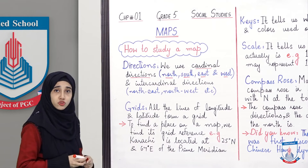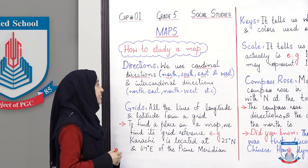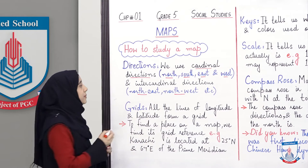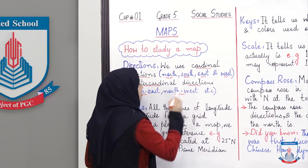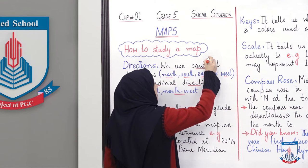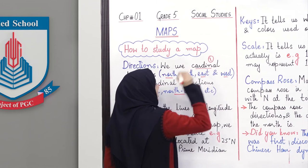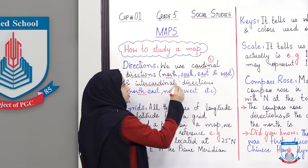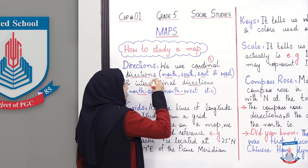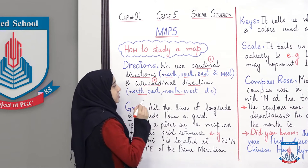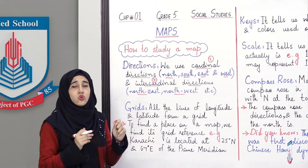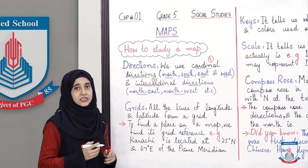Aur is ke ilawa hum kuch aur directions bhi use kertethe hai, jaise ke north-east, north-west, south-east. Toh in ko hum kehethe hai inter-cardinal directions. Toh hum ne kin do directions ki baat ki hai? Cardinal directions — jo ke hoti hai north, south, east and west — aur inter-cardinal directions, jo ke hoti hai joh cardinal directions ke beech mein hoti hai.